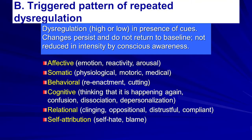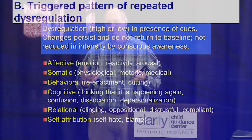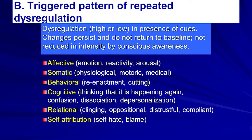Then there is the triggered pattern of repeated dysregulation. What sets up is dysregulation of the affective system — of emotional modulation and control — and this begins to affect just about all areas of the self. Dysregulation can be high or low in the presence of cues. High meaning meltdowns, acting out, becoming violent. Low meaning, at one extreme, catatonia, dissociation, shutting down — exploding and imploding. These changes persist and do not return to baseline. Crucially, these over- or under-arousals are not reduced in intensity by conscious awareness — meaning insight doesn't seem to help.